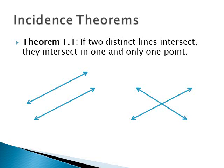Okay, so here's the first one. If two distinct lines intersect, they intersect in one and only one point. Okay, so the pair of lines on your left are parallel. They're never going to intersect ever, just like our little math funny today.